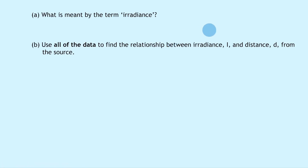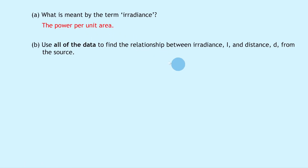Irradiance is the power per unit area of electromagnetic radiation incident on a surface — or you can simply say the power per unit area.